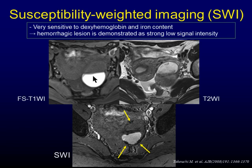Susceptibility-weighted imaging may give another appearance of endometriotic cysts. Since SWI is very sensitive to deoxyhemoglobin and iron content, hemorrhagic lesions are demonstrated as strong low signal intensity. In endometriotic cysts, hemosiderin deposition is shown on the cyst wall as low signal intensity. The contribution of SWI to endometriotic cyst evaluation has not yet been reported.